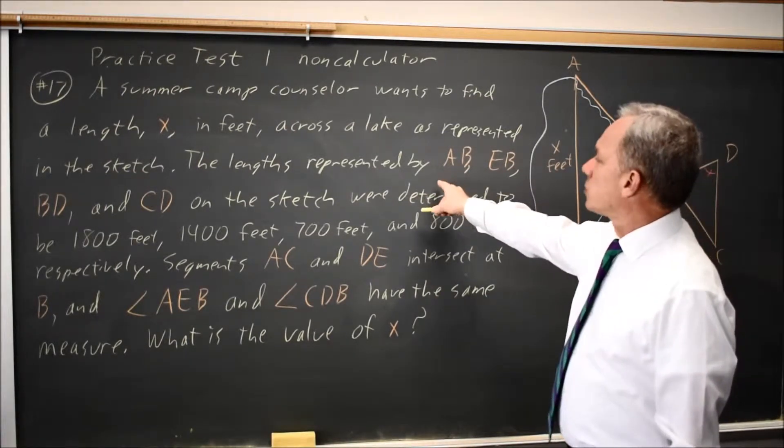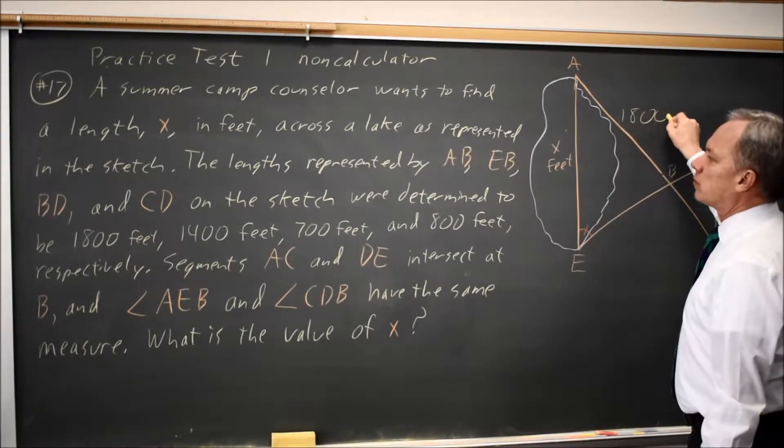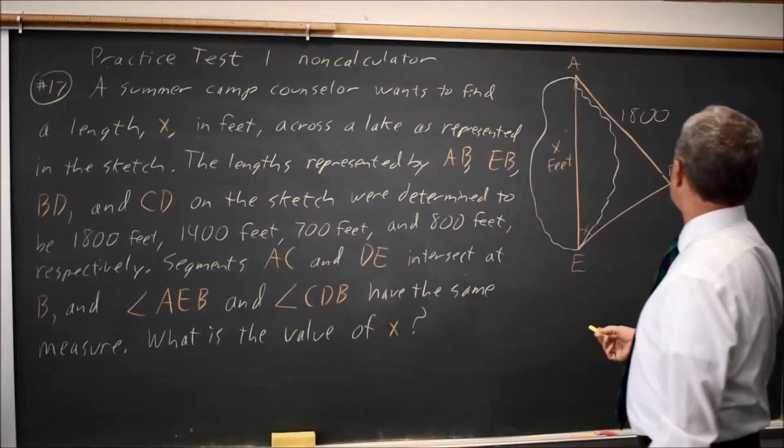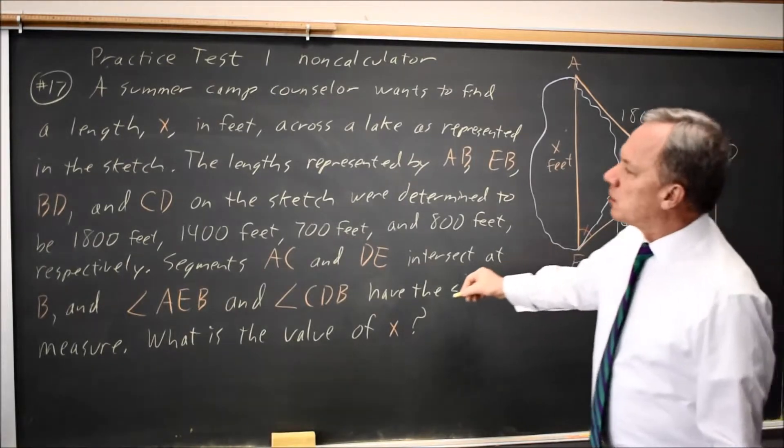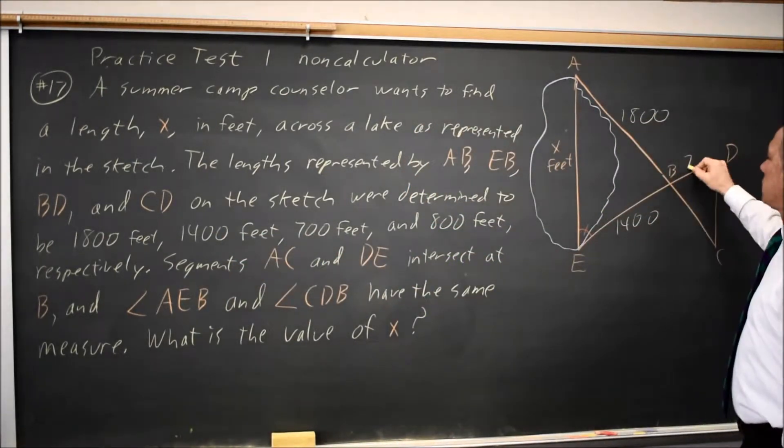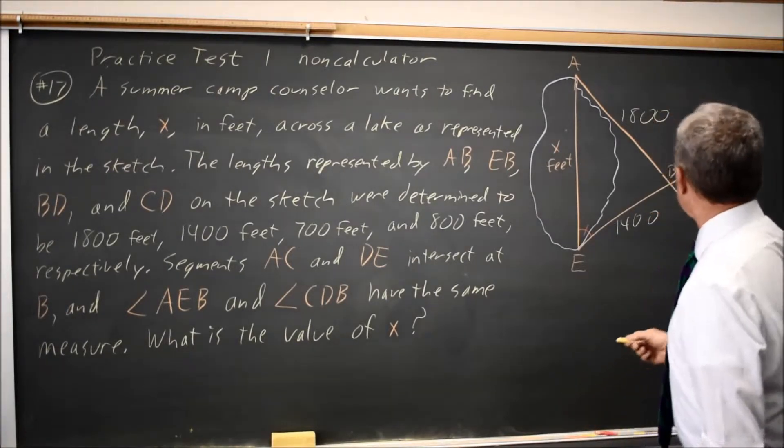AB, we're told, is 1,800 feet. EB is 1,400 feet. BD is 700 feet. And CD is 800 feet.